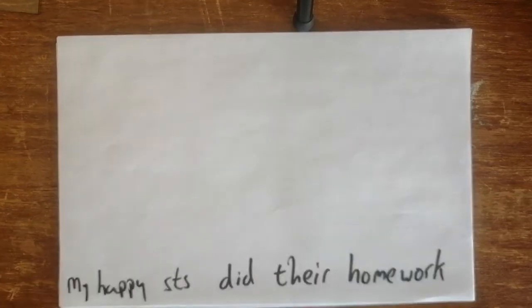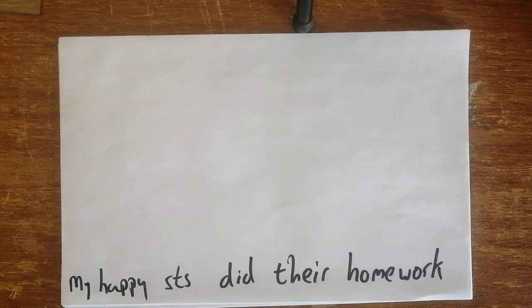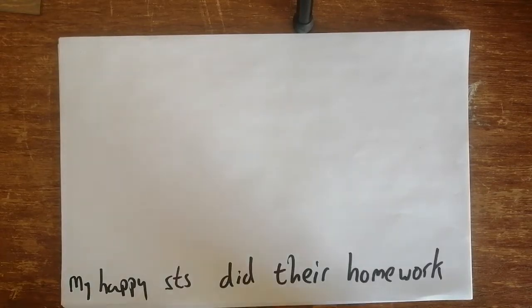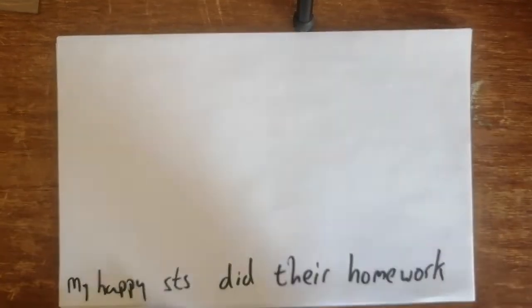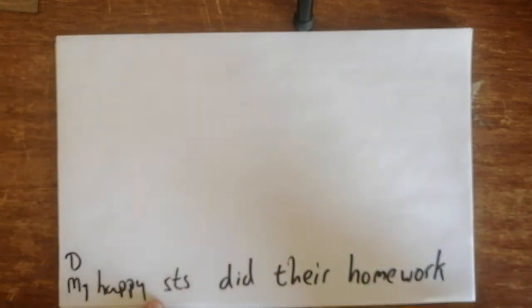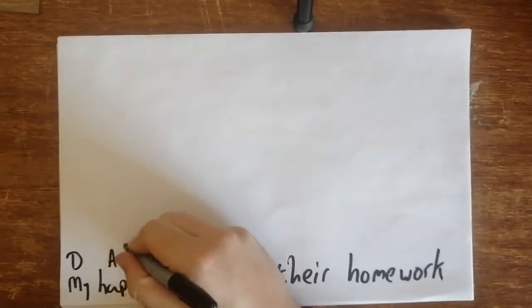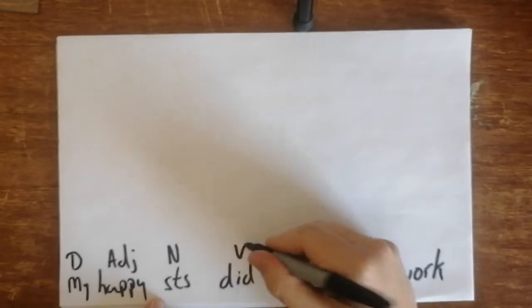Okay guys, so in this video I'm going to do a slightly more complicated syntactic tree. First things first, we need to mark the tree. So 'my' is the determiner, 'happy' is an adjective, 'students' is a noun, 'did' is a verb, 'their' is a determiner, and 'homework' again is a noun.